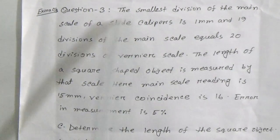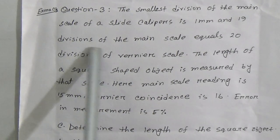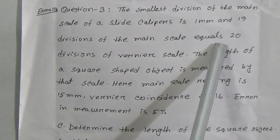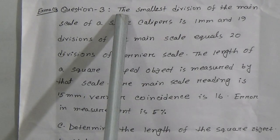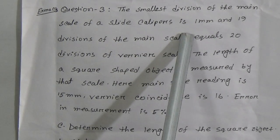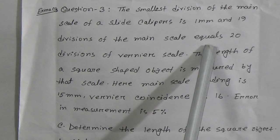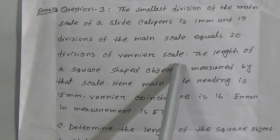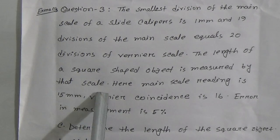Extra CQ3. Our question is: the smallest division of the main scale of a slide calipers is one millimeter, and 19 divisions of the main scale equals 20 divisions of the Vernier scale. The length of a square shaped object is measured by that scale.